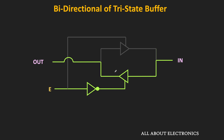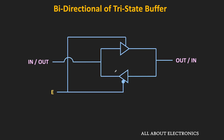Instead of using two active high tri-state buffers, if we use one active high and one active low tri-state buffer, then we can avoid the additional NOT gate. In this case, whenever the enable input is high, the upper tri-state buffer will get enabled, and whenever this enable input is low, the lower tri-state buffer will get enabled. So that is the very basic design of the bi-directional buffer.